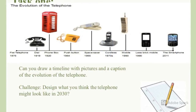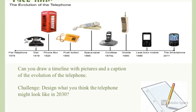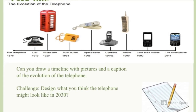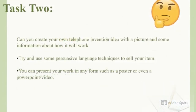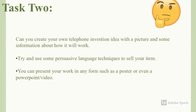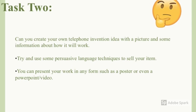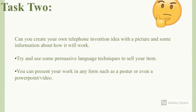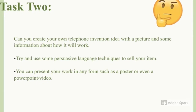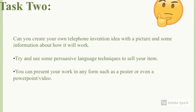For your first task today, I would like you to draw a timeline with pictures and a caption of the evolution of the telephone. Your challenge at the end is to design what you think the telephone might look like in 2030. For Task 2, can you create your own telephone invention idea with pictures and some information on how it will work? Try and use some persuasive language to sell your item. You can present your work in any form, such as a poster or even a PowerPoint and video. Remember, you can put your work on Tapestry or on our Facebook page. Good luck and have fun!